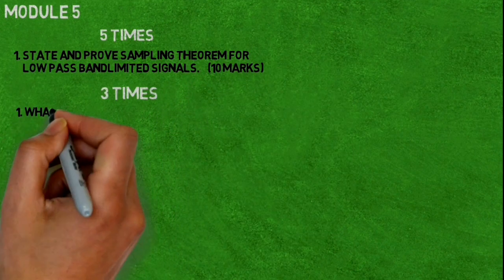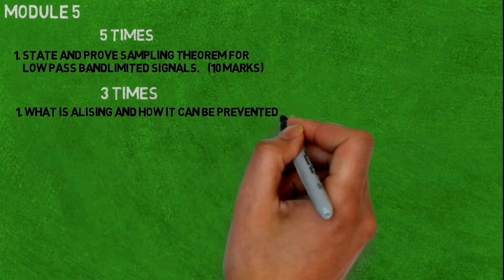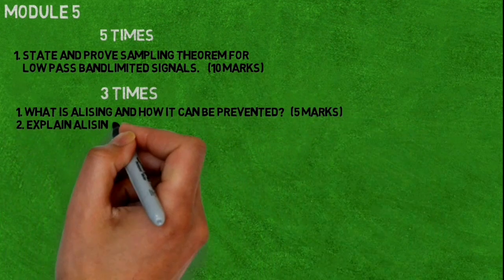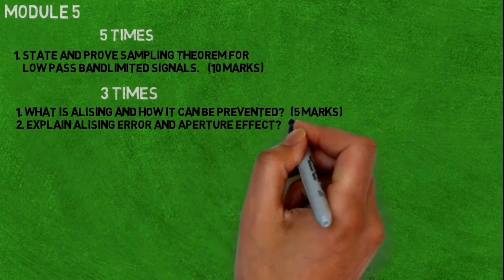Three times repeated questions are: what is aliasing and how it can be prevented? Next, explain aliasing error and aperture effect.